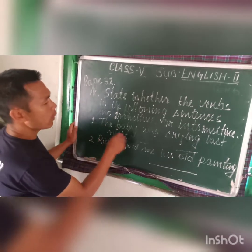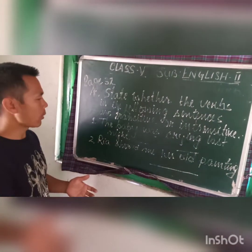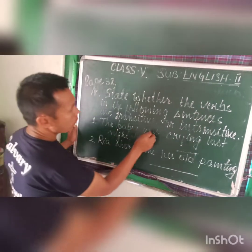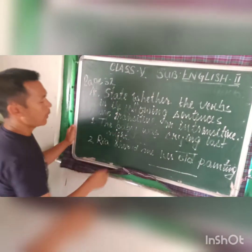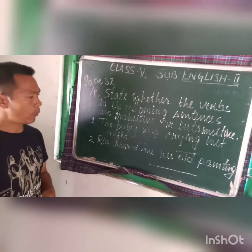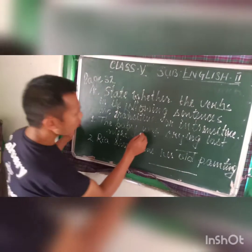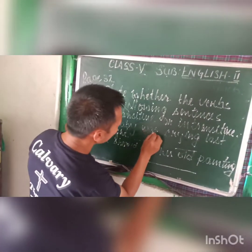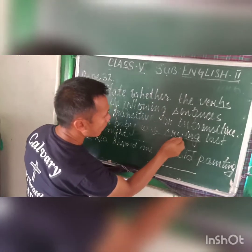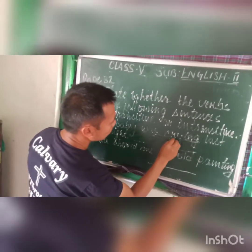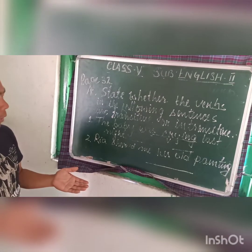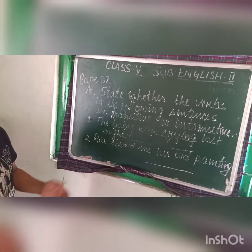Let us see whether the verb in this sentence is transitive or intransitive. Let us read the sentence: 'The baby was crying last night.' First of all, we have to find out the verb — which one is the verb here? Crying is the verb here. Now, is the main verb 'crying' transitive or intransitive? This is what the question is asking us.